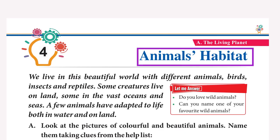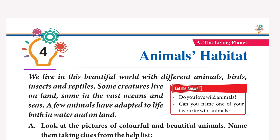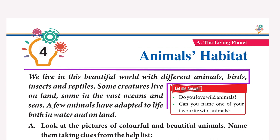Chapter 4: Animals Habitat. We live in this beautiful world with different animals, birds, insects, and reptiles. Some creatures live on land, some in the vast oceans and seas. A few animals have adapted to life both in water and on land.